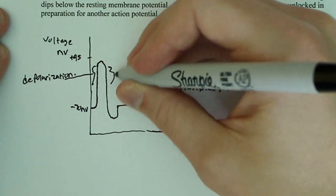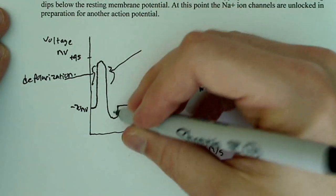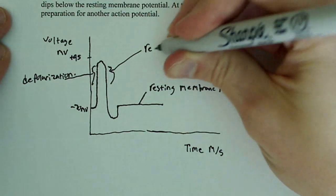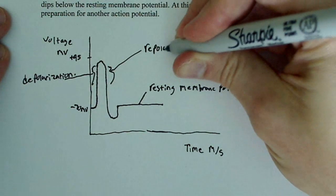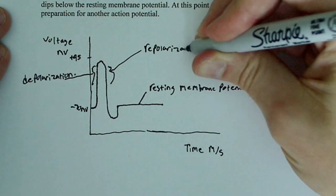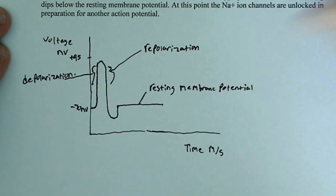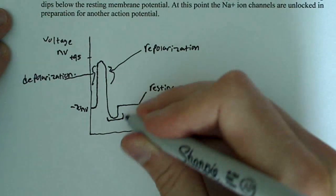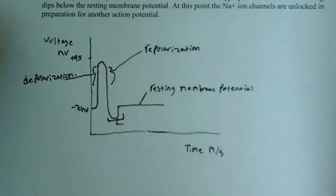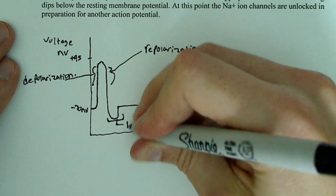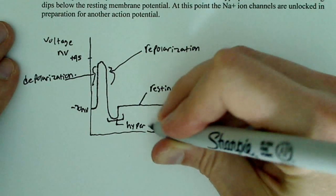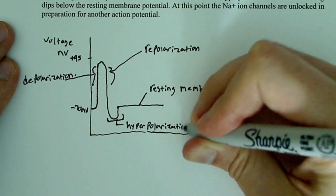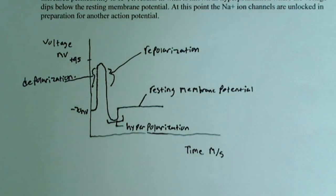The subsequent decrease is known as repolarization. And this dip here — where the voltage becomes even more negative than the original resting membrane potential — is known as hyperpolarization.